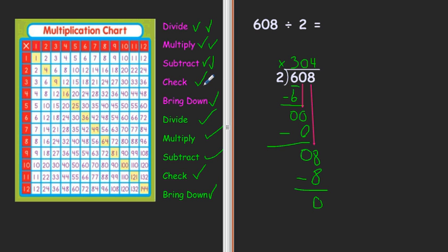And is 0 less than 2? Yes. So I check. And do I have a remainder? No. There's nothing left to bring down. So I am finished with this.